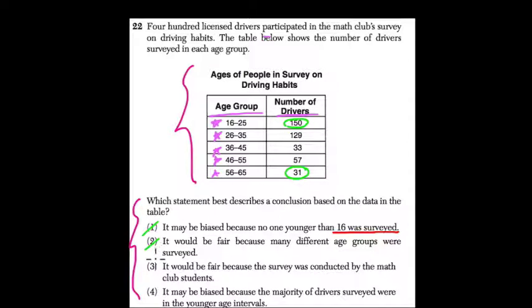Three: it would be fair because the survey was conducted by the math club students. Well, I guess the person surveying it shouldn't really matter, right? They should treat this as a scientific process and not input their biases. So whether or not they're math club students is irrelevant.